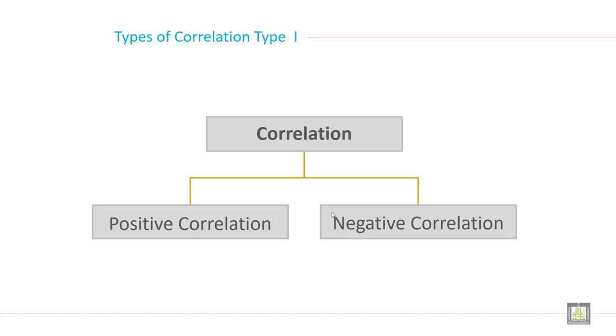Types of correlation can be categorized in many ways. This is the first type of correlation we are discussing here. Correlation can be divided into two types: positive correlation and negative correlation. Positive correlation ranges from 0 to plus 1, and negative correlation ranges from minus 1 to 0. These are the ranges of positive correlation and negative correlation.